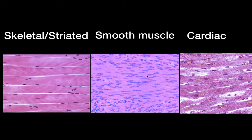Then there's kind of a combination between the two: cardiac muscle. It looks striated, but cardiac muscles are only found in the heart. These structures here are called intercalated discs, which allow the transmission of electrical signals to wash over the whole tissue — and that's how the heart is able to contract.